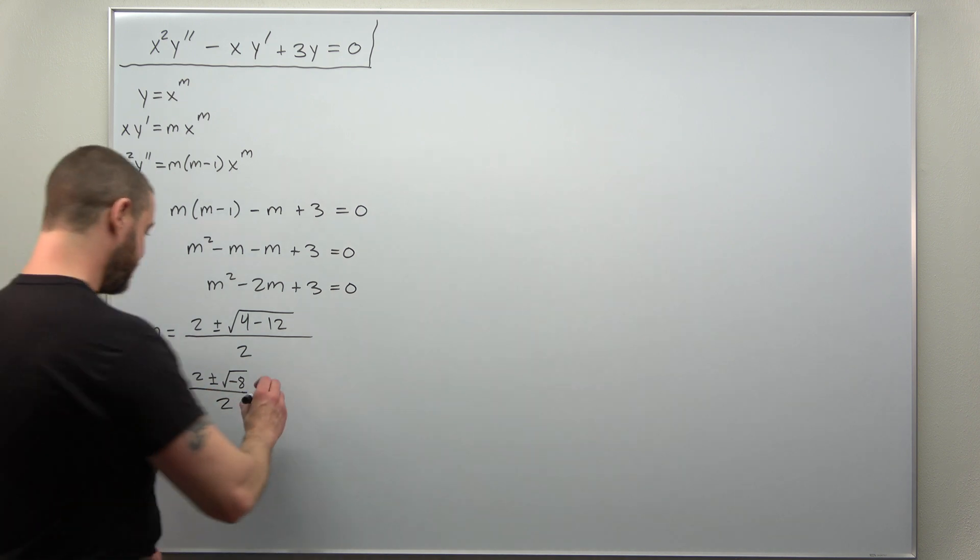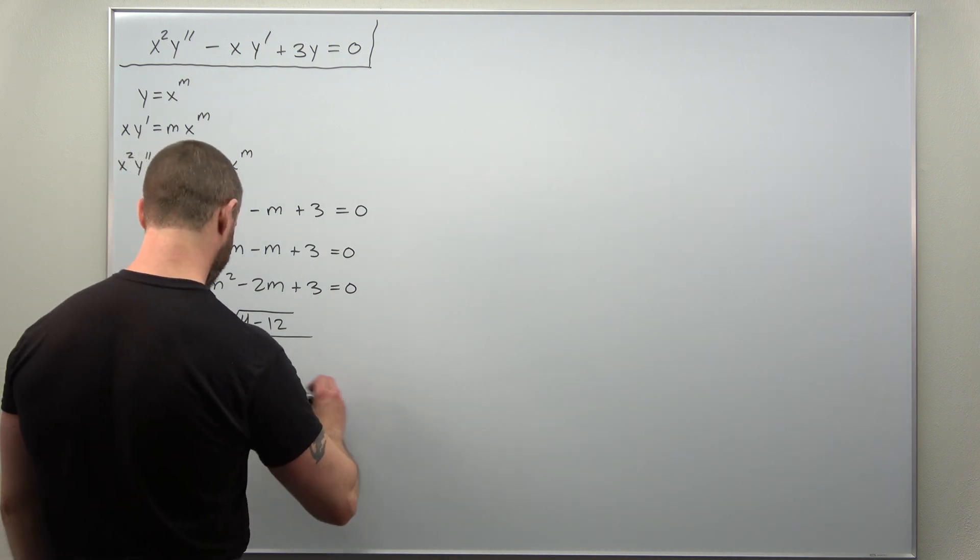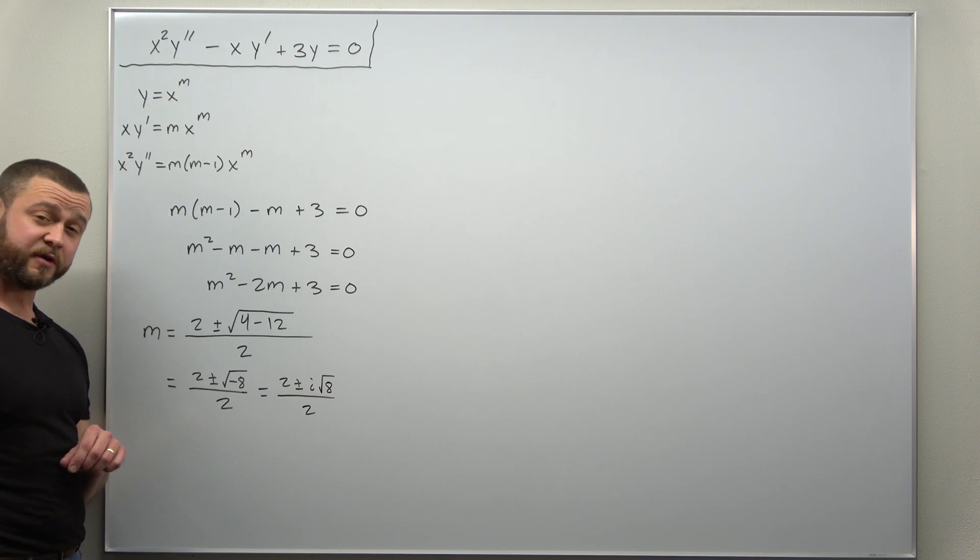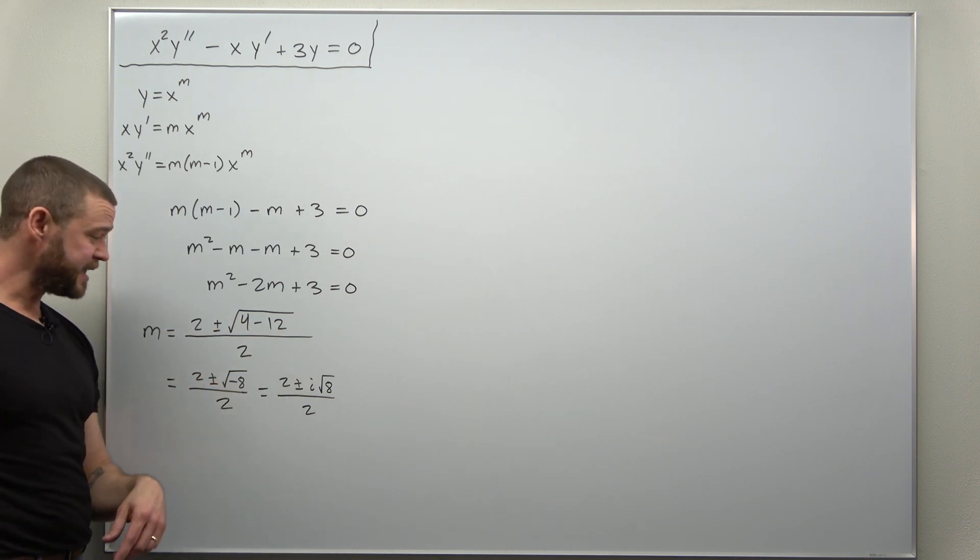We can split this up. Write that as 2 plus or minus i square root of 8 over 2. And you've probably encountered square root of 8 a lot.